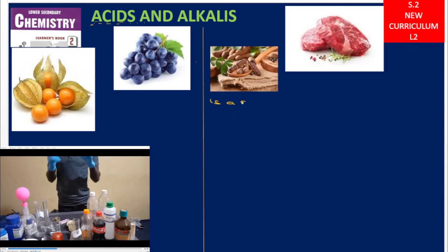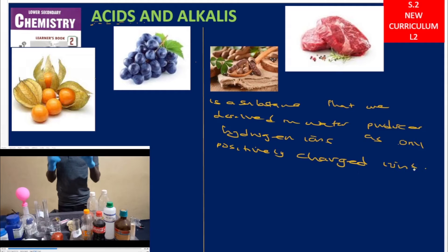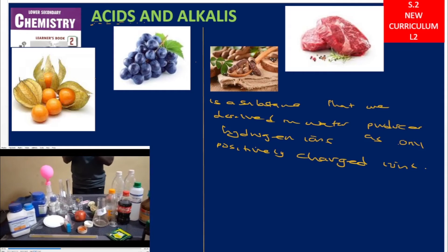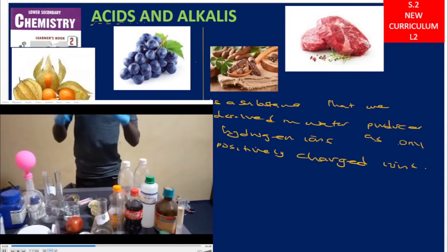In this lesson we are going to understand what we call an acid. An acid is a substance which, when dissolved in water, produces hydrogen ions as the only positively charged ions. So when you take an acid and dissolve it in water, it is going to produce hydrogen ions, and these hydrogen ions are going to be positively charged.